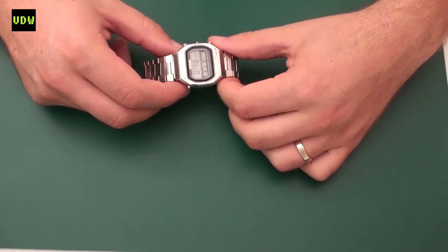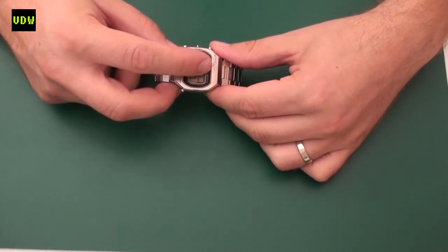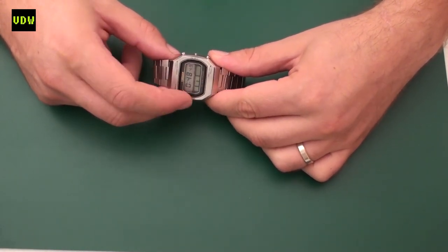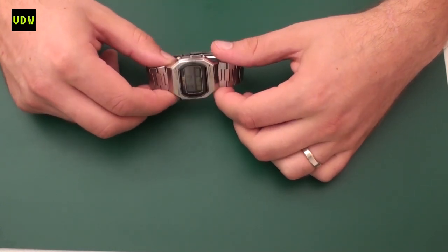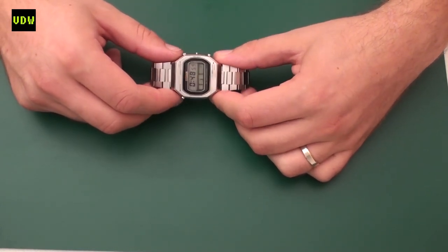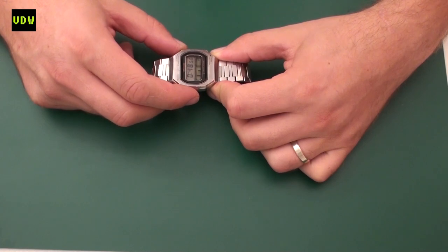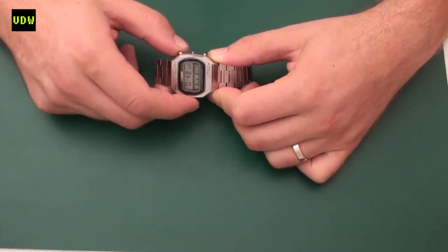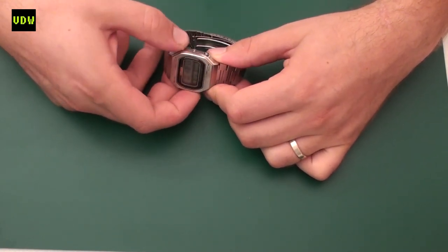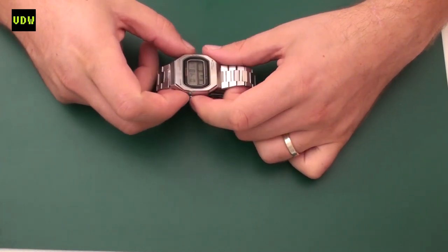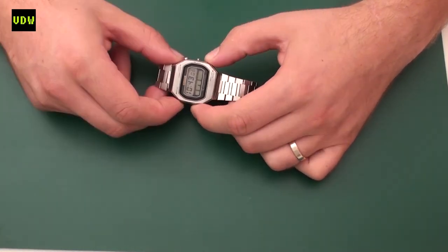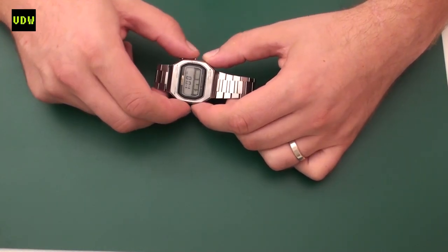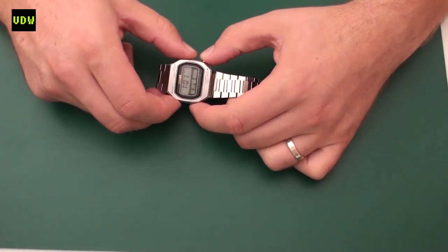One of them is that the display is really scratched, fairly scratched. The microlight doesn't work—if I push it, nothing happens. And the sound, the alarm, also doesn't work. The buttons, however, do press smoothly and they seem to cycle through all the functions of the watch.